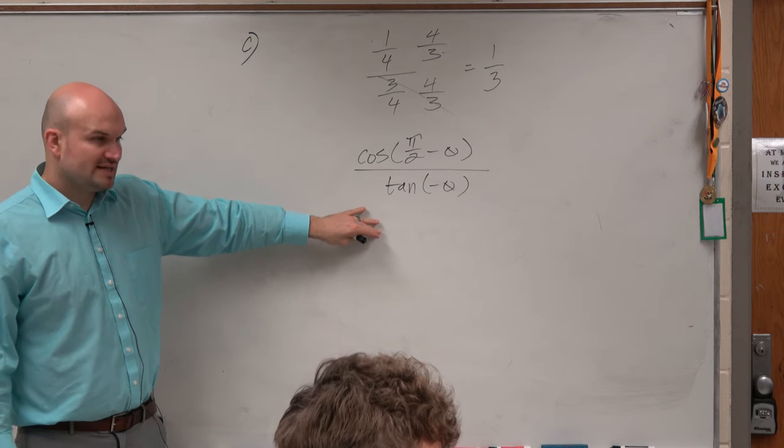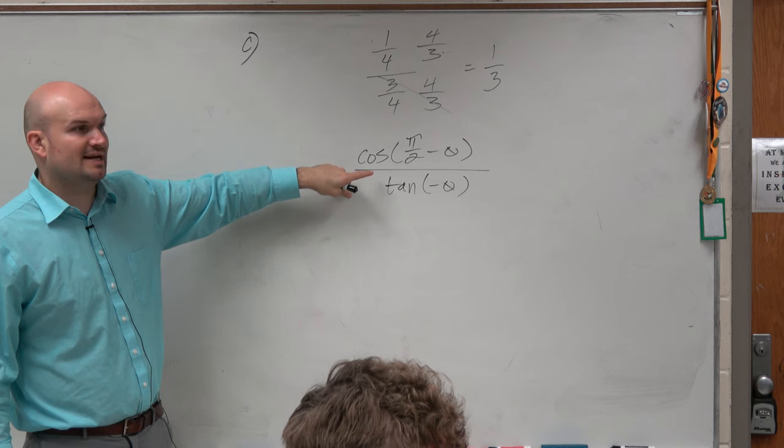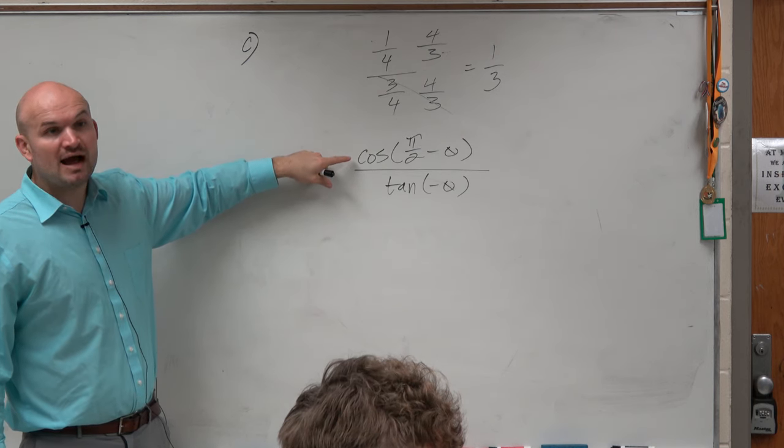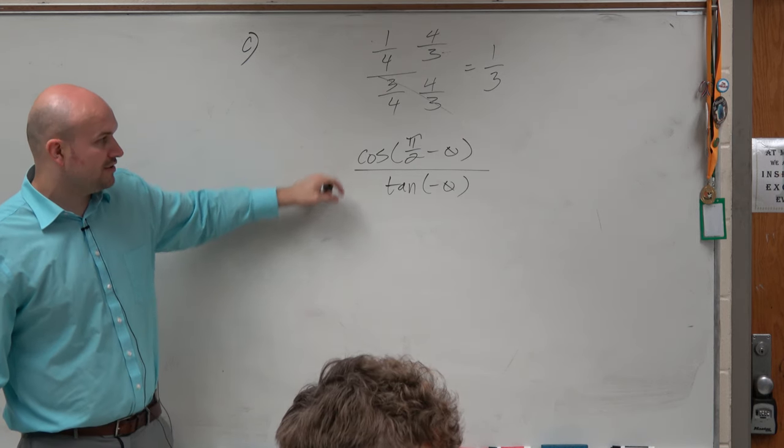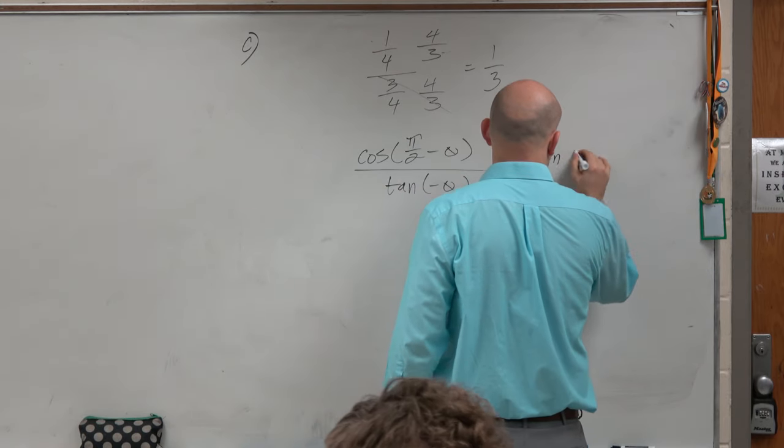The first thing before we get to that point, though, we realize: let's get rid of this co-function identity here. We know that the cosine graph with these transformations will make it look like the sine graph. So that's really just the same thing as sine of theta.